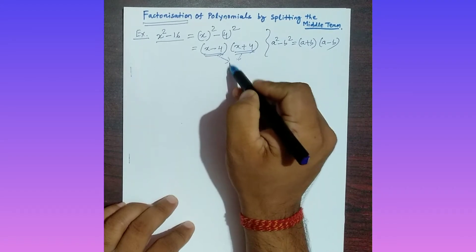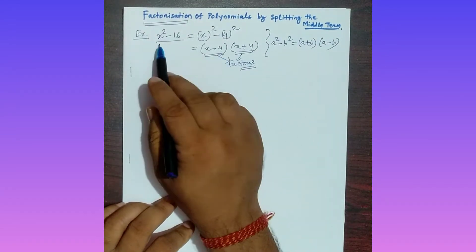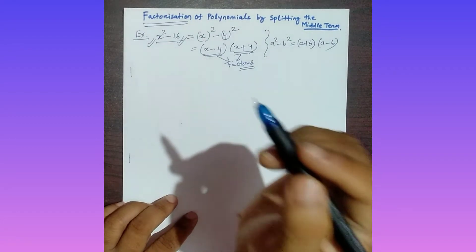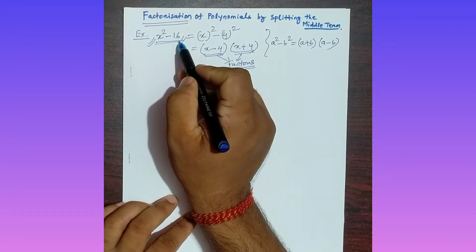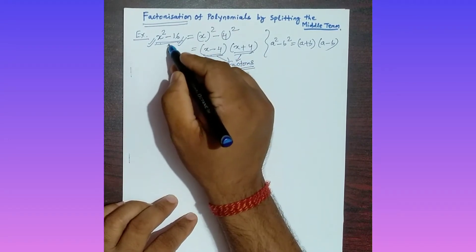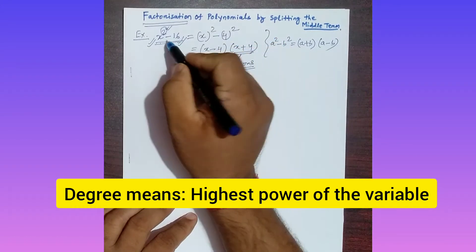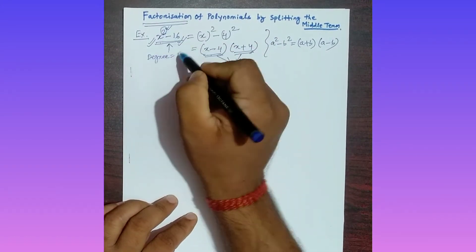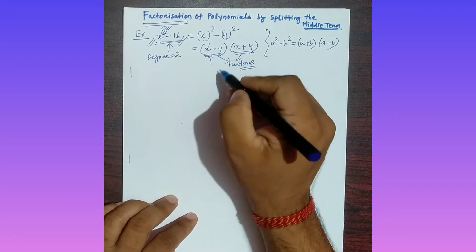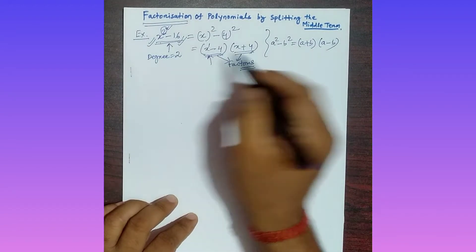So here you are getting (x - 4)(x + 4). These are called the factors. x - 4 is a factor of this polynomial and x + 4 is also a factor. The given polynomial has degree 2, while each factor x - 4 and x + 4 has degree 1, which is less than the degree of the given polynomial.